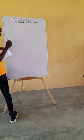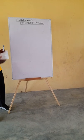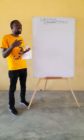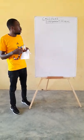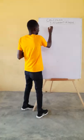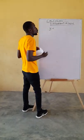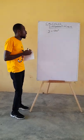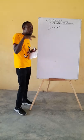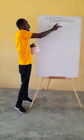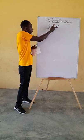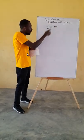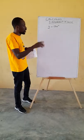Differentiation is simply the gradient of a curve. Differentiation is also referred to as the derivative of a function. So for instance, if I have a function y equals to ax exponent n, where y is the dependent variable, x is the independent variable, a is the coefficient of the variable x, and n is the exponent. And we are asked to differentiate this.